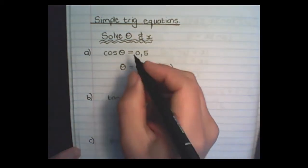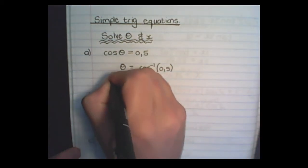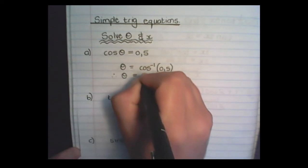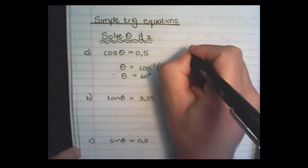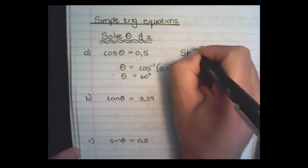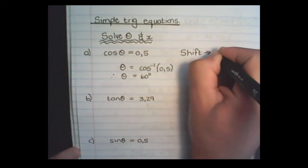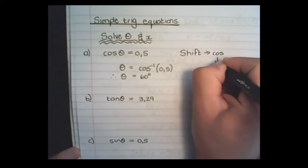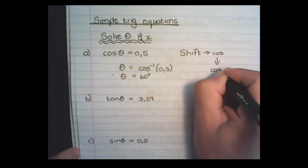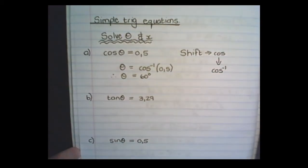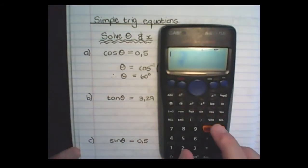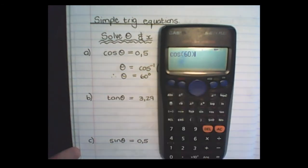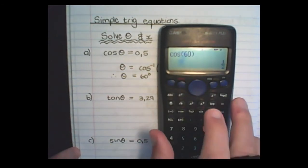Therefore, theta is equal to 60 degrees. So those steps on the calculator: I press shift and then cos — this will take me to the reverse of the cos function. To test my answer, I can say the cos of 60, and if I am correct, then the value should be a half.